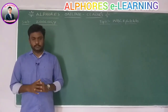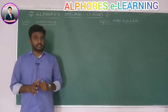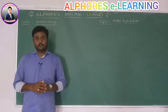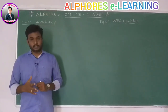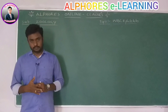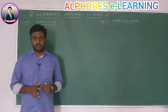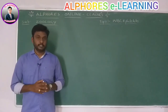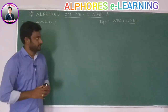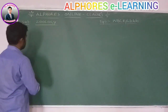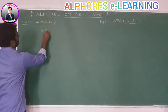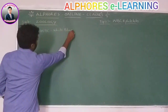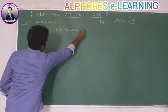We discussed RBC, erythropoiesis (production of RBC), and hemopoiesis (production of all blood cells), as well as the structure and functions of RBC. Today we start WBC — white blood cells.